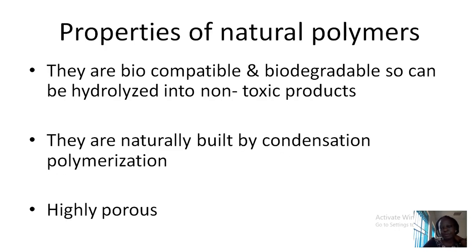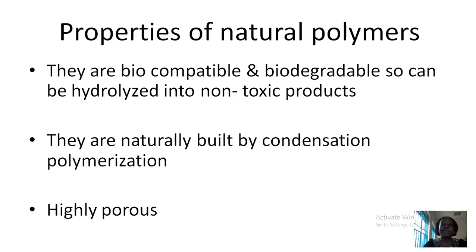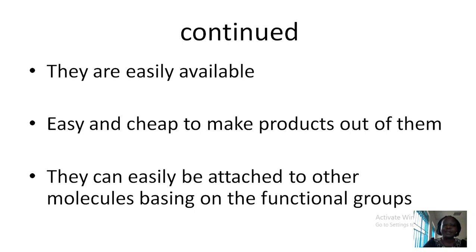What are the properties of natural polymers? The natural polymers' properties are almost opposite to the properties of the synthetic polymers. Remember we said that most synthetic polymers are non-biodegradable. Here we find that natural polymers are biocompatible and biodegradable, so they can easily be hydrolyzed into non-toxic products. They can easily be built by condensation polymerization, whereby by condensation we mean we join a monomer with another monomer but there is loss of a water molecule. They are highly porous, meaning water can easily drain into them. They are easily available — we can easily find the starch, the proteins, the eggs and so on. They are easy and cheap to make products out of, and they can easily be attached to each other molecule by functional groups.